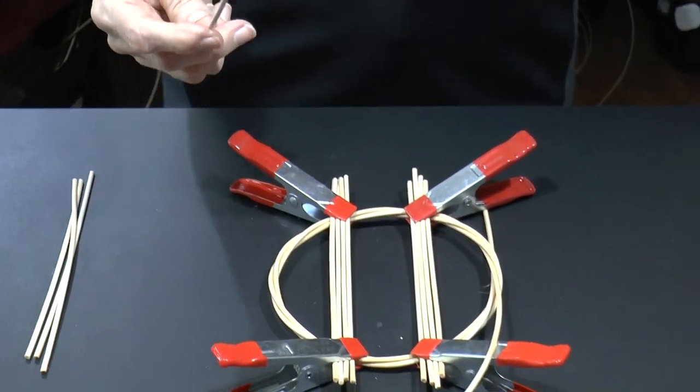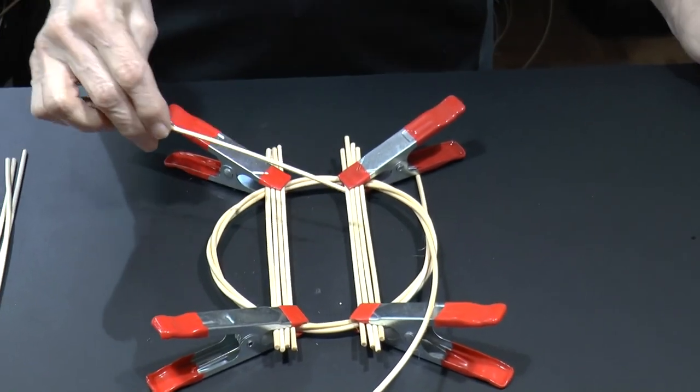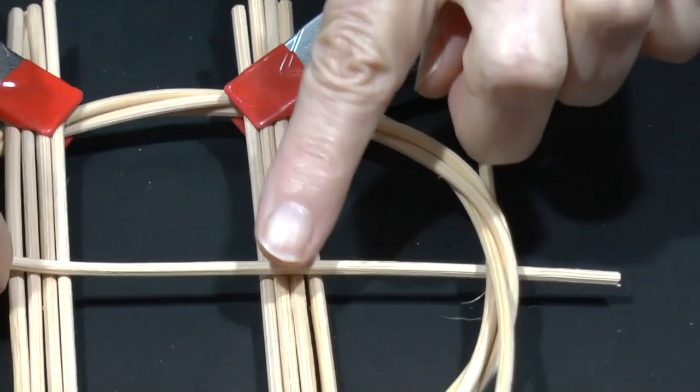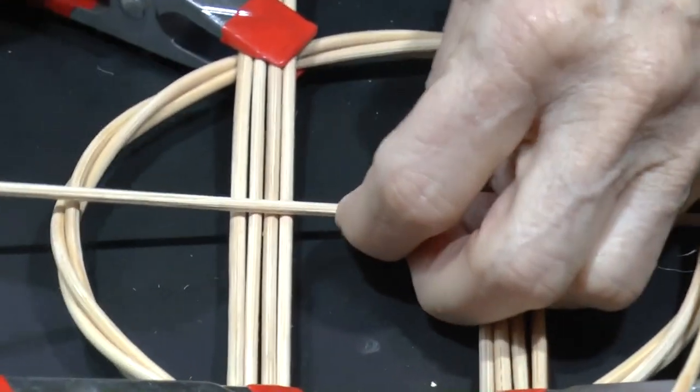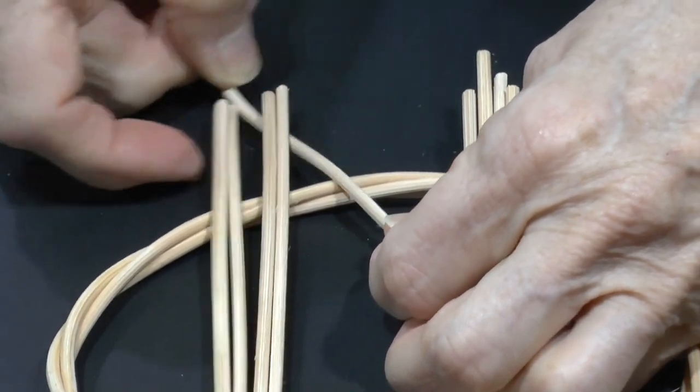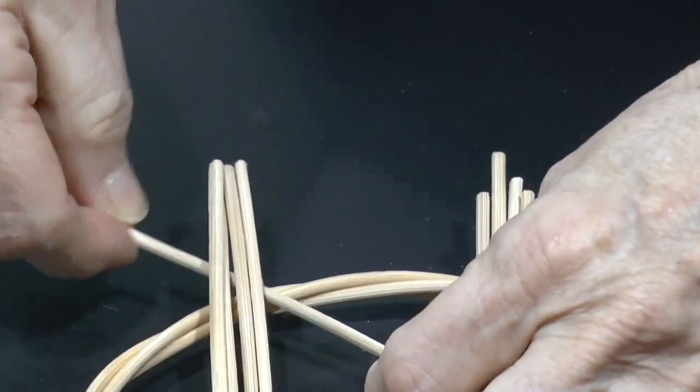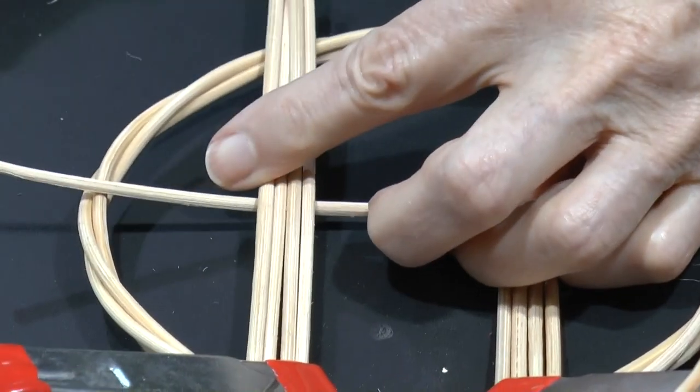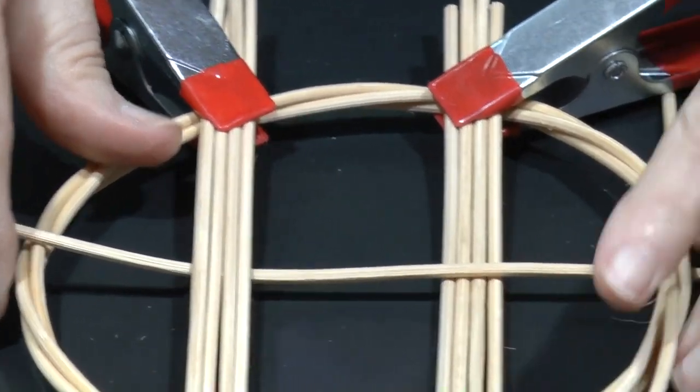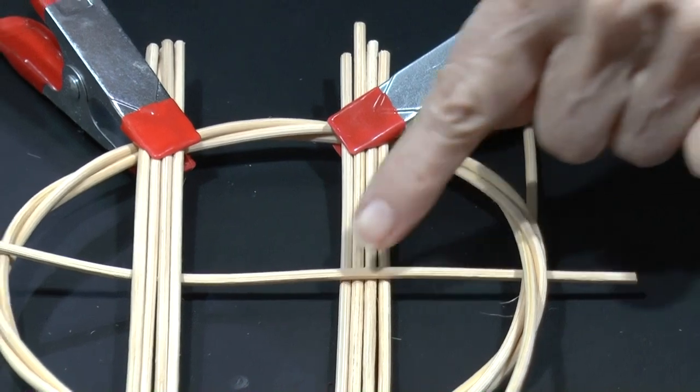Starting on the left, we go under the ring, over the spoke on that side. Then, we'll release the clamp on the spokes on the right side, weaving under those, and then over the outer ring, and put the clamp back in place. That leaves us with a typical weaving pattern of under, over, under, over.